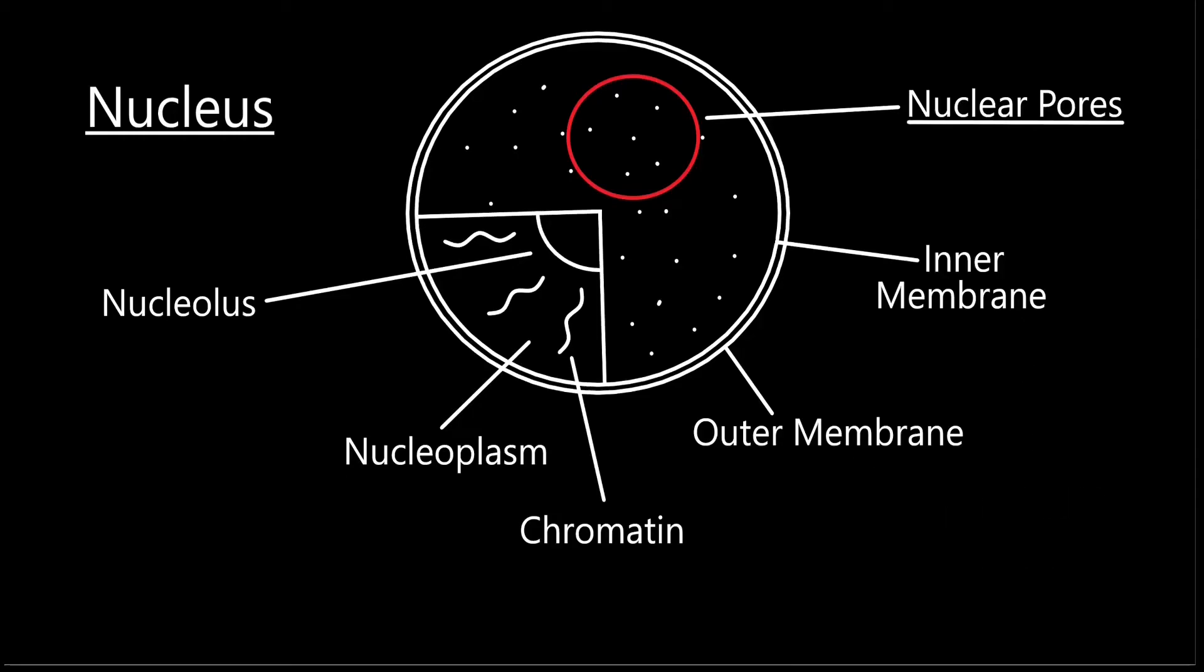And then, last but not least, there are the nuclear pores. These are little holes in the envelope. They allow certain materials to leave or enter the nucleus, but they won't just flow around. They have to be required in some way to either leave or enter. Otherwise,